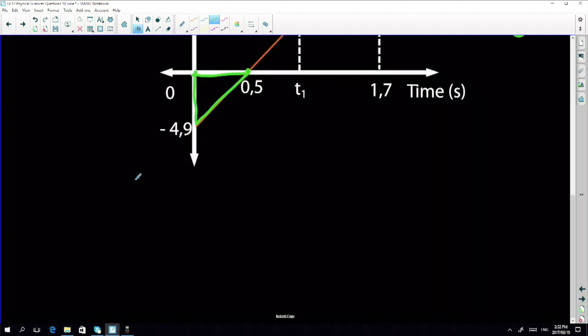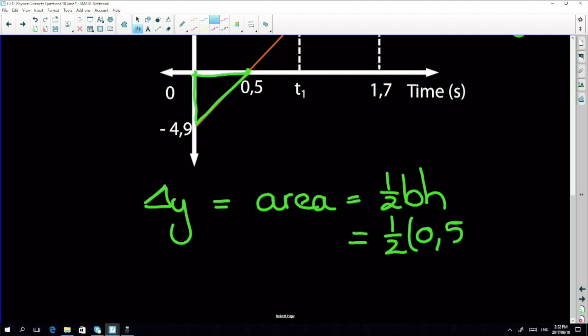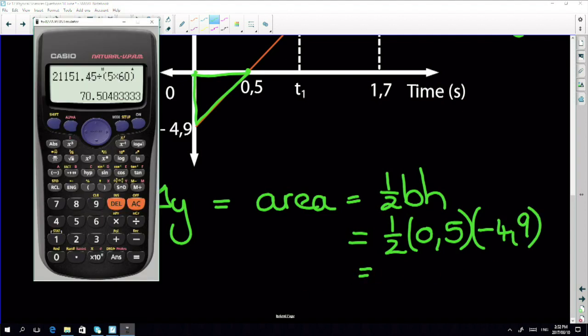My delta y equals my area under the graph. This happens to be a triangle, so that means it's one-half base times height. My base is 0.5, my height is minus 4.9. We use it as it is, so it's 0.5 times 0.5 times 4.9, and it is minus.